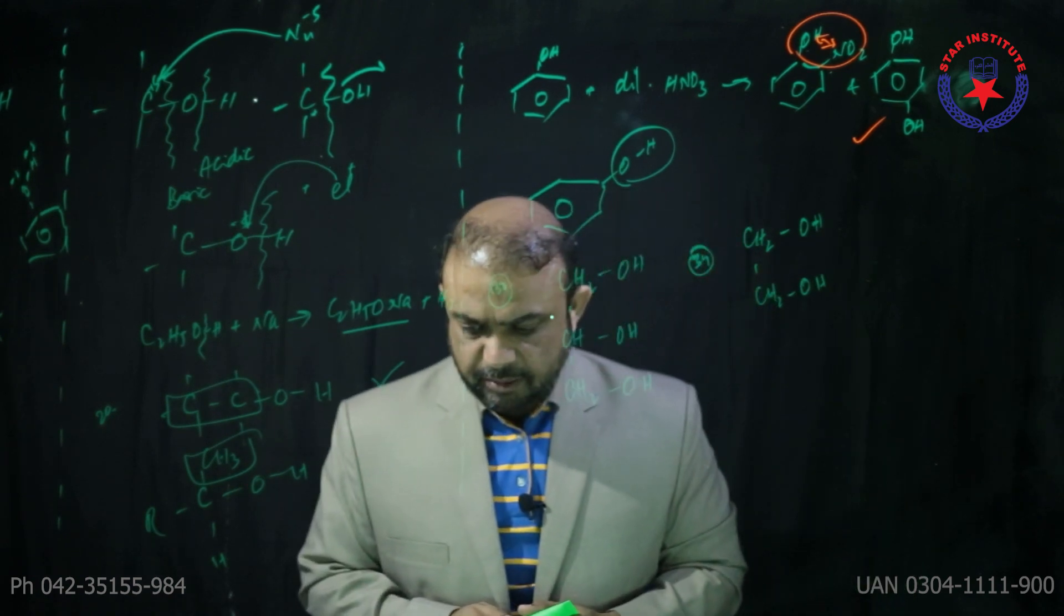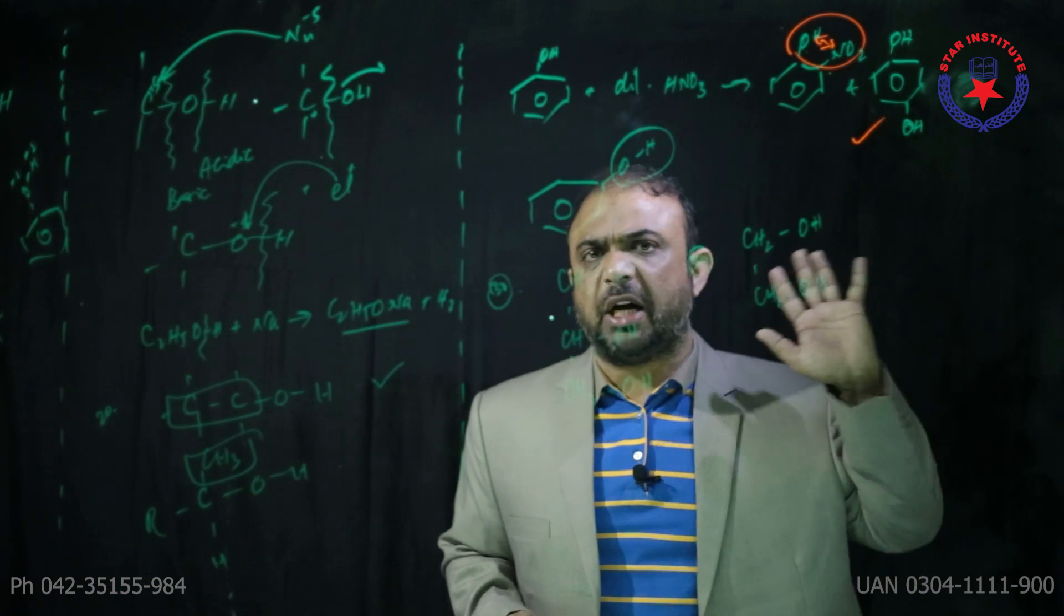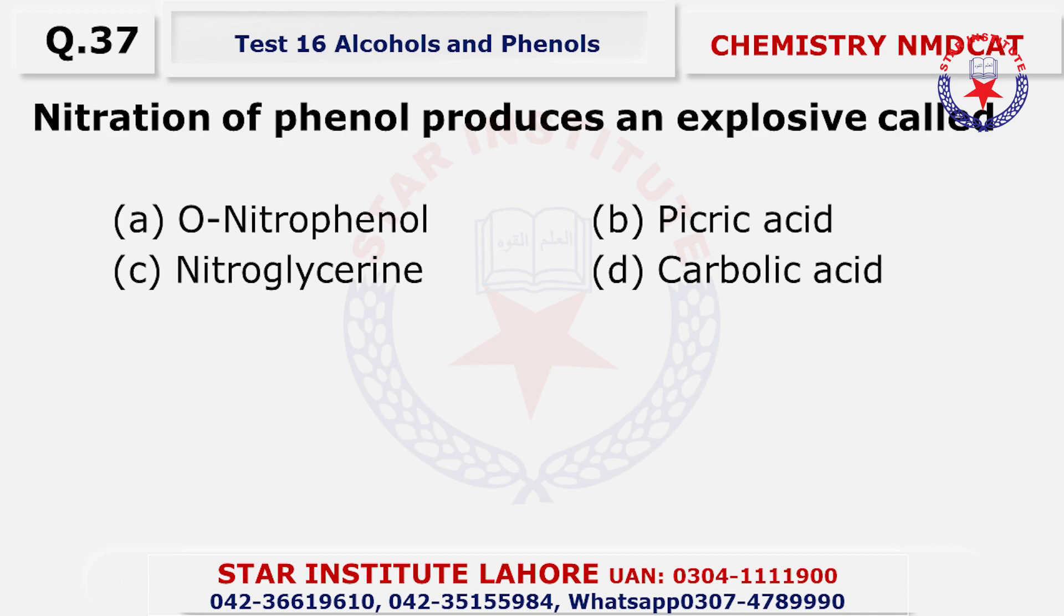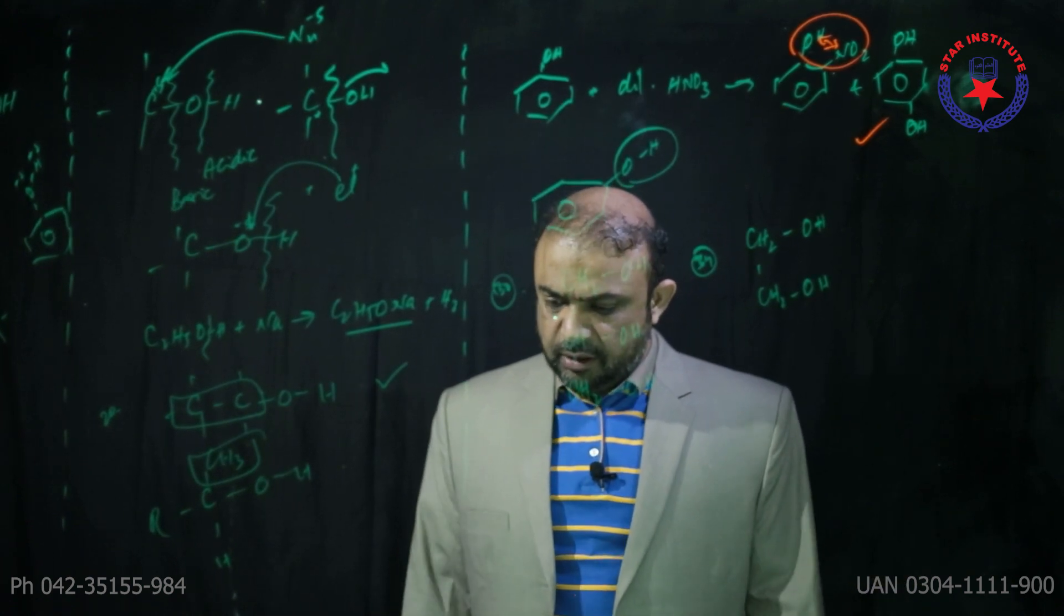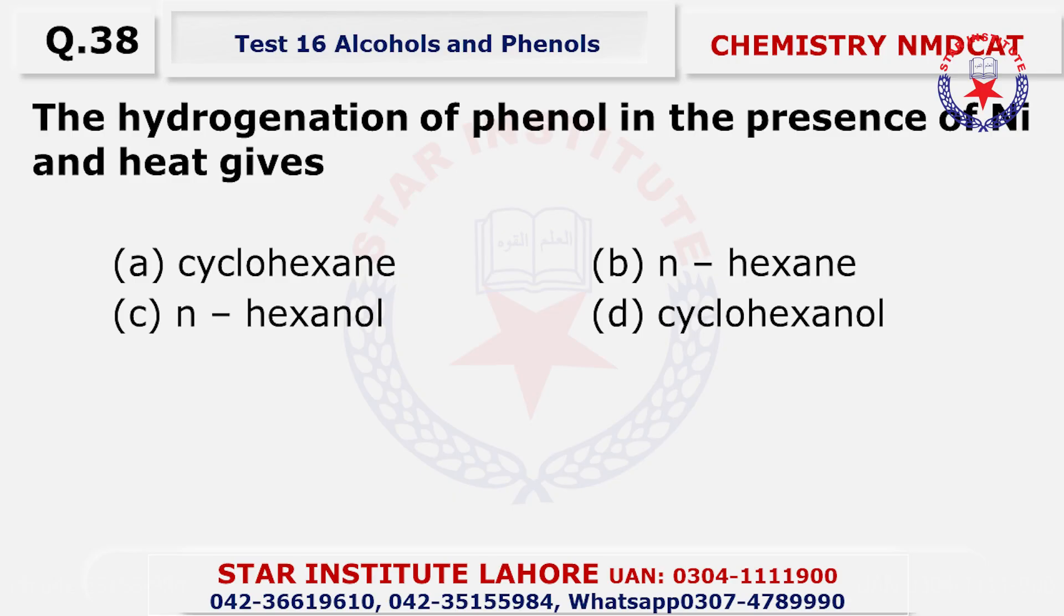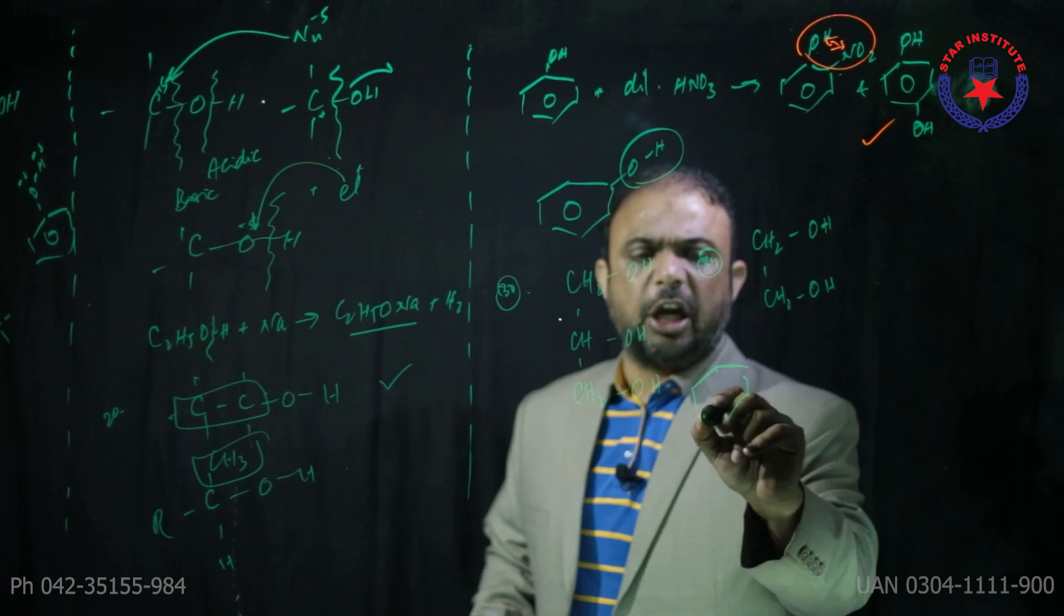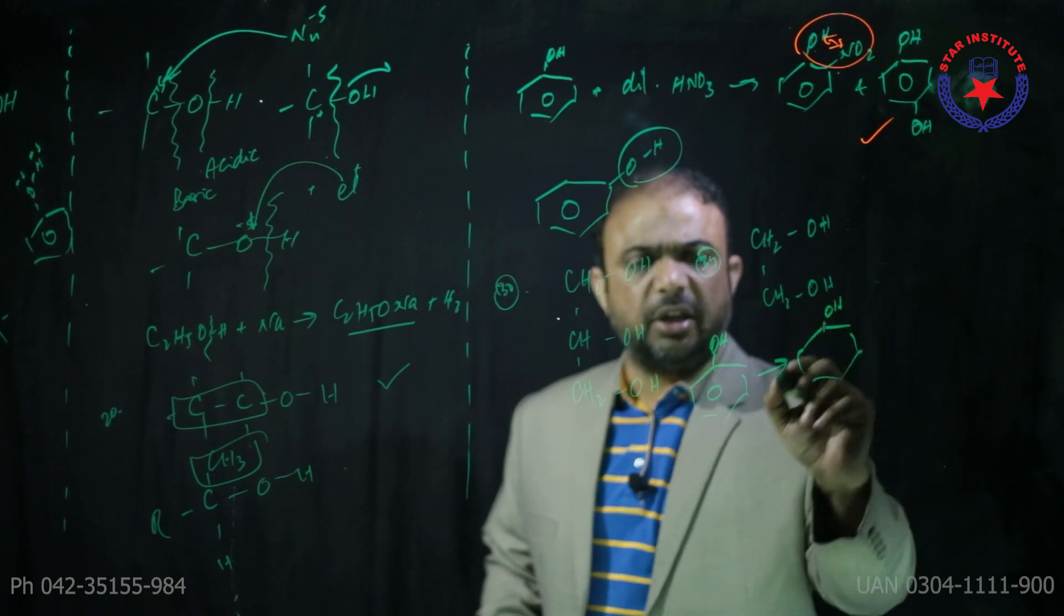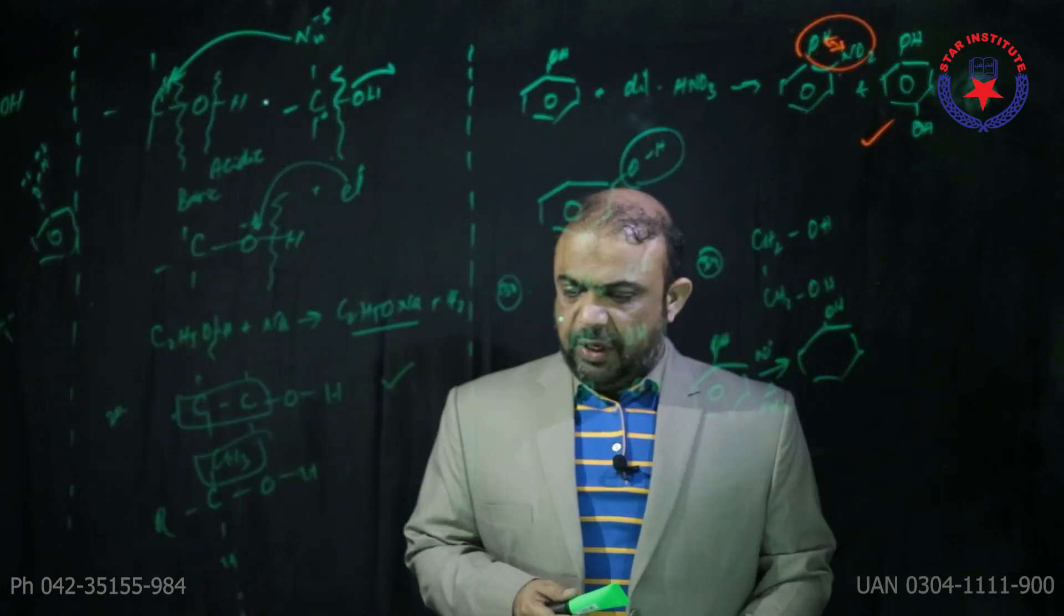Question thirty-six: phenol is acidic due to resonance of its conjugate base - phenolate ion is resonantly stabilized with five resonance contributing structures. Question thirty-seven: nitroglycerin is the explosive. Question thirty-eight: hydrogenation of phenol in presence of nickel and heat gives cyclohexanol - double bonds are eliminated. Question thirty-nine: phenol reacts with zinc dust to give benzene - the OH group is removed, forms ZnO, and converts to benzene.